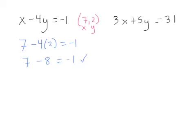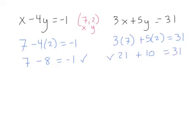But it's not a solution if it doesn't also work in the other equation. So over here I've got 3 times 7 plus 5 times 2 has to equal 31, right? Well, 3 times 7 is 21, plus 10 does equal 31, doesn't it? And so this solution is a solution to the system of equations because it worked in both equations.